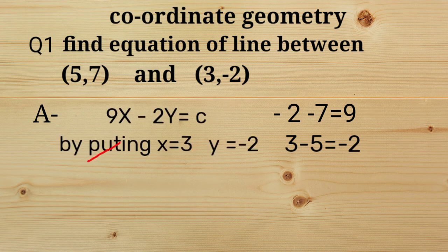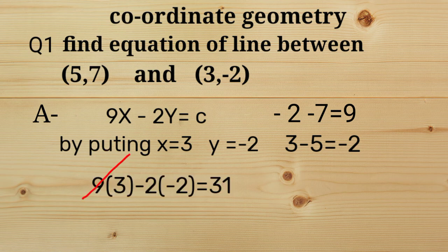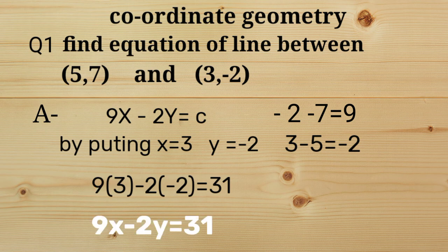Now put x equals 3, y equals minus 2. We get 9 times 3 minus 2 times minus 2 equals 31. So final equation is 9x minus 2y equals 31.